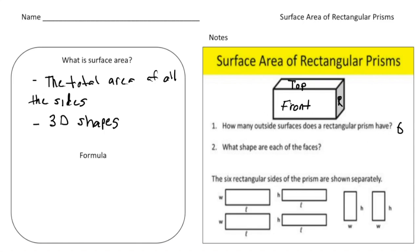Notice that each one of these sides is actually a rectangle — so what shapes are the faces? They're rectangles. Here, I've taken apart this rectangular prism and laid out all the faces. We have two that are the front and the back, two that are the top and the bottom, and two that are the left-hand side and the right-hand side.